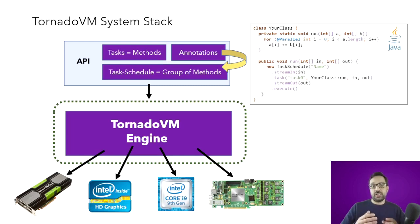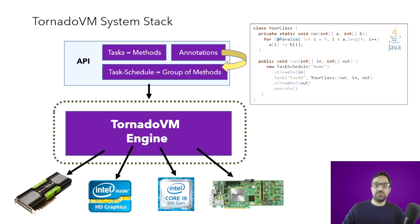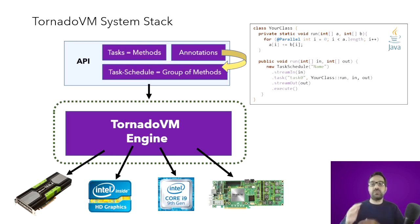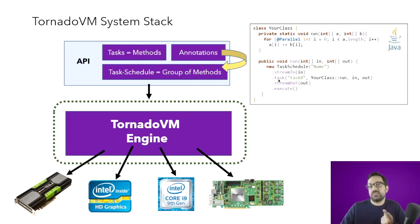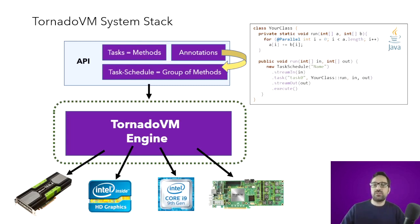An example of a task schedule: you create a task schedule, give it a name, and then define a set of tasks — in this case just one, but you can have as many as you want. The TornadoVM engine takes input expressions from the bytecode level and automatically generates code for different architectures. Right now, Tornado has two backends: OpenCL and CUDA. The user can select which one to use, or TornadoVM can pick the best one.